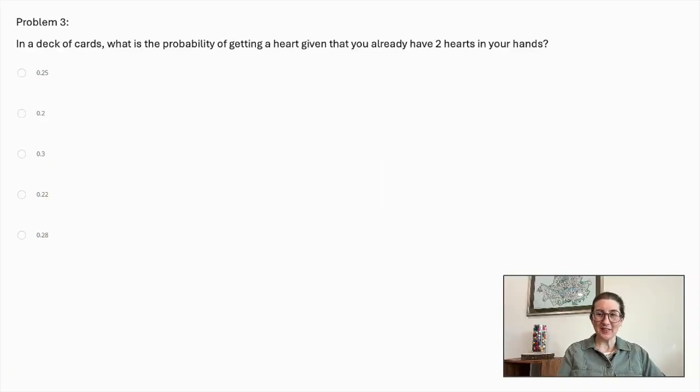Problem number 3. In a deck of cards, what is the probability of getting a heart, given that you already have 2 hearts in your hands? 0.25, 0.2, 0.3, 0.22, or 0.28. Let's do the math.